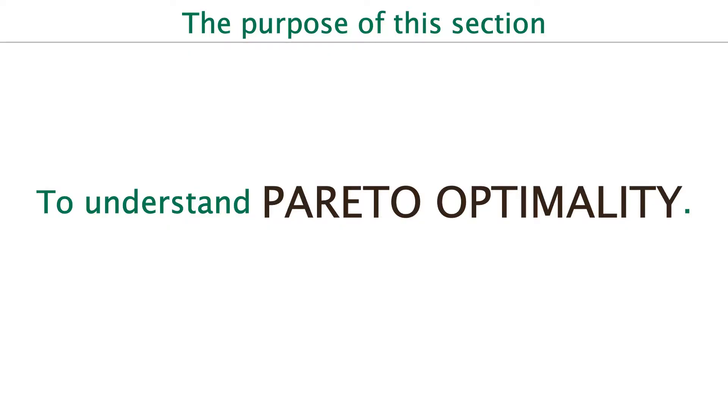The optimality in multi-objective optimization is called Pareto optimality. In order to understand Pareto optimality, let's take a very simple example.